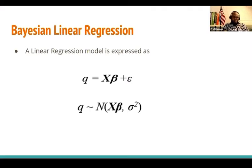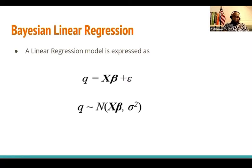When we assume a straight-line relationship, we use conventional linear regression, and at the end of the day we have a single estimate of the response. But in the case of Bayesian linear regression, it is assumed that the response variable is actually going to be sampled from a given probability distribution.